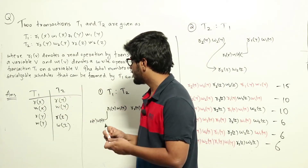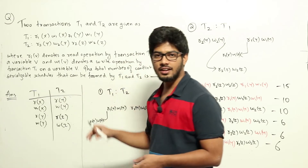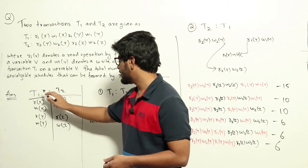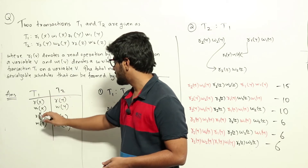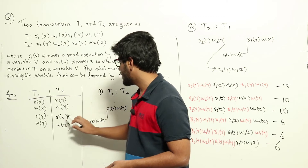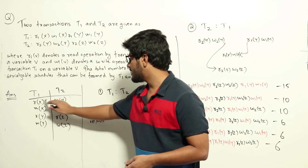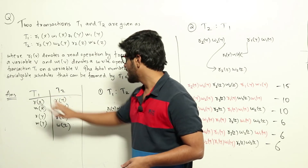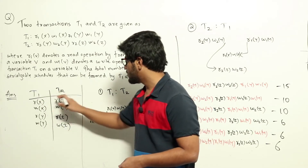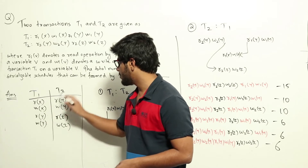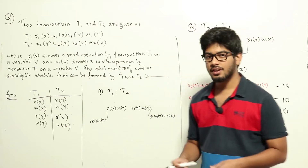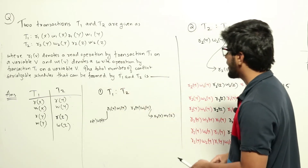A conflict occurs when two transactions are reading and writing on the same data object. T1 operates on X and Y; T2 operates on Y and Z. Data item X is operated upon only by T1, and data item Z is operated upon only by T2. So the common data item between T1 and T2 is only Y — we only need to worry about conflict serializability for data item Y.